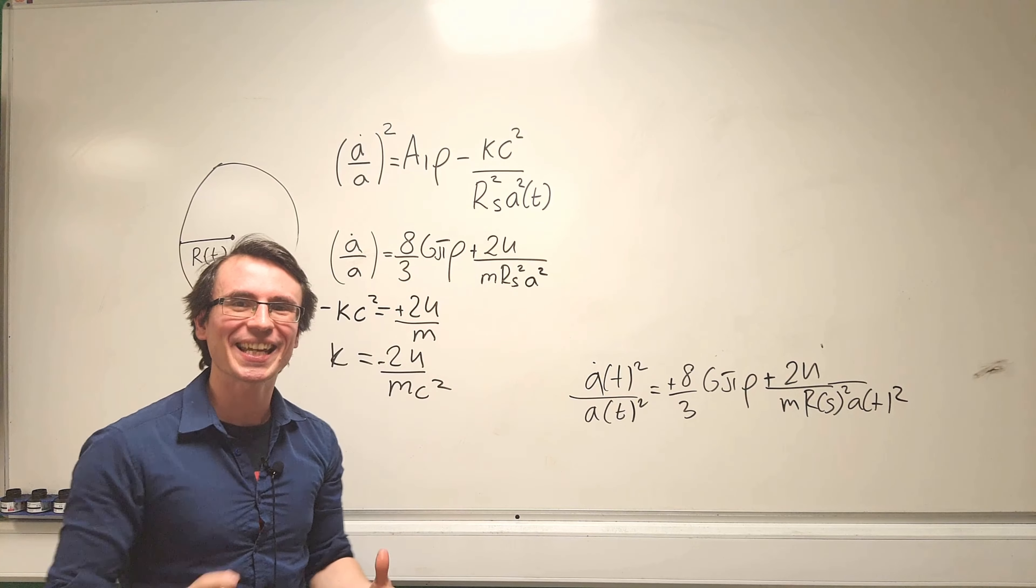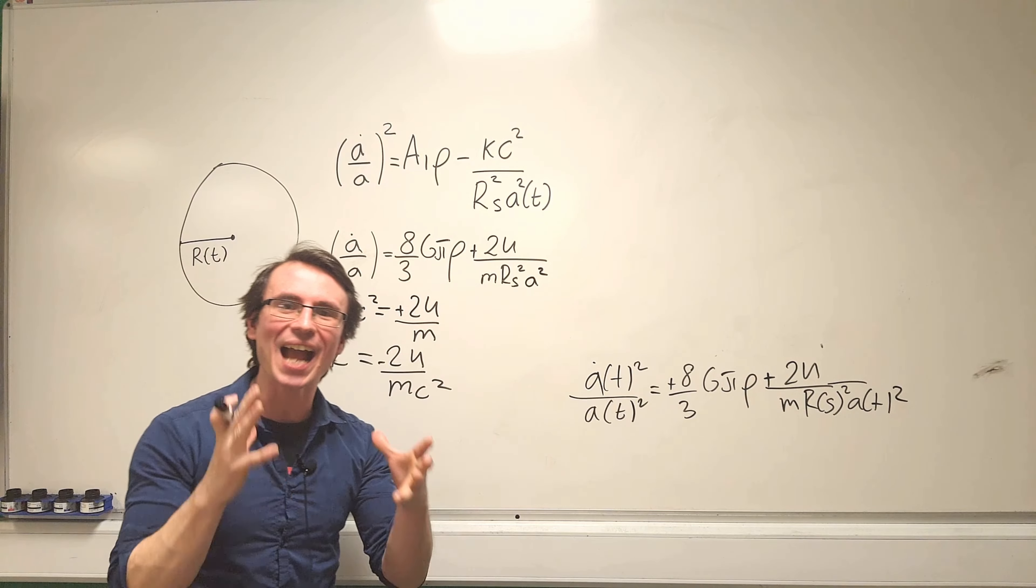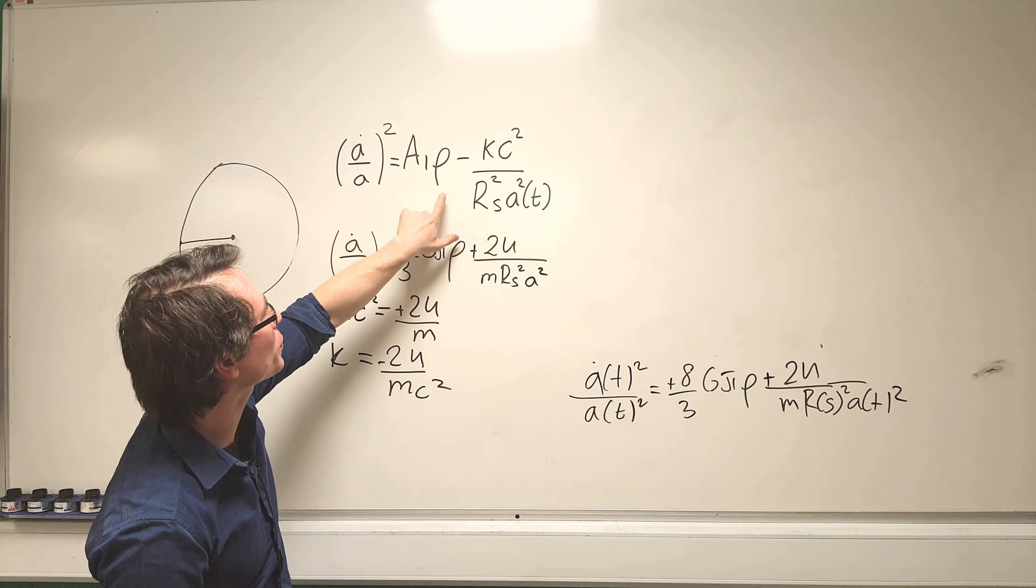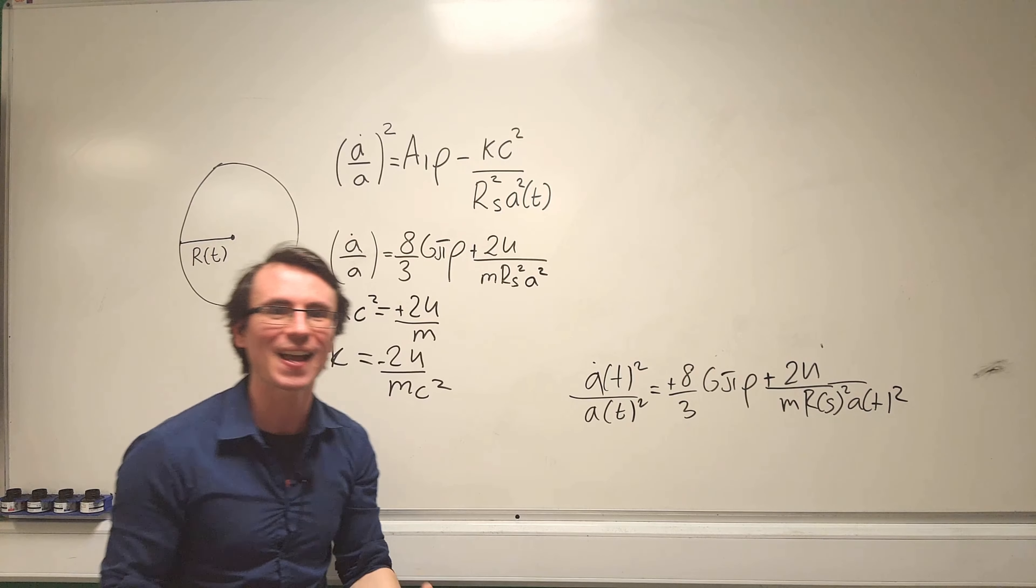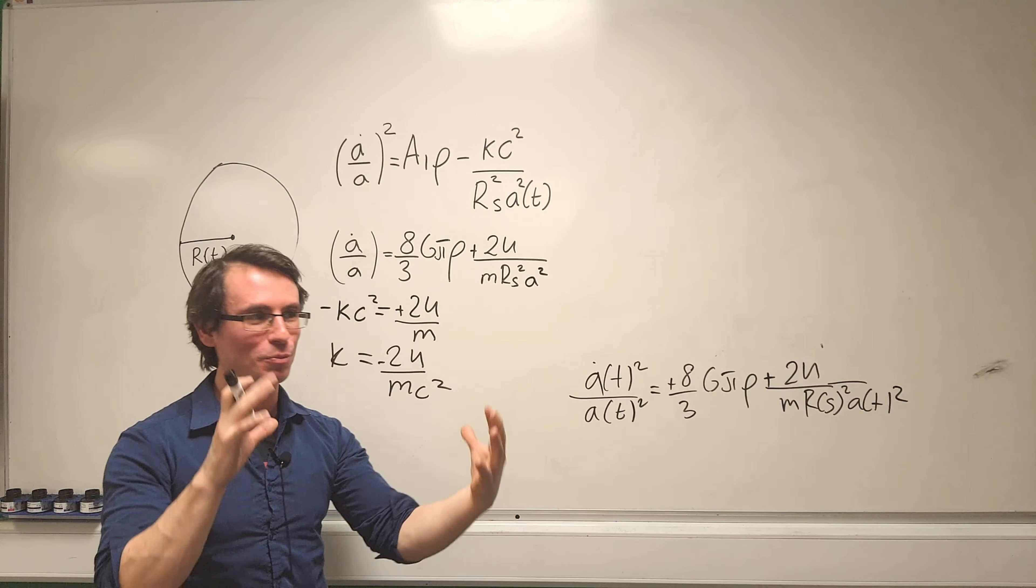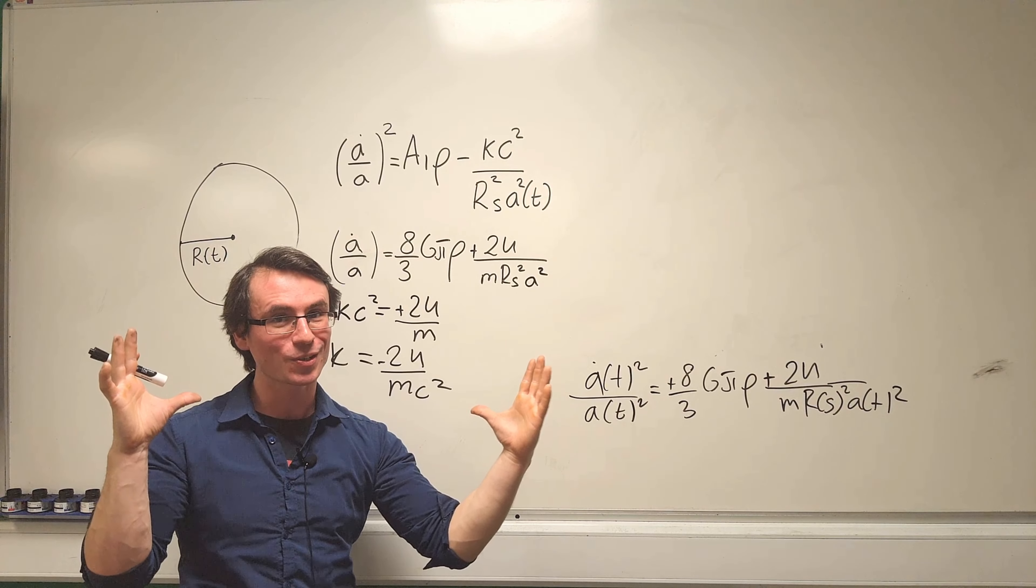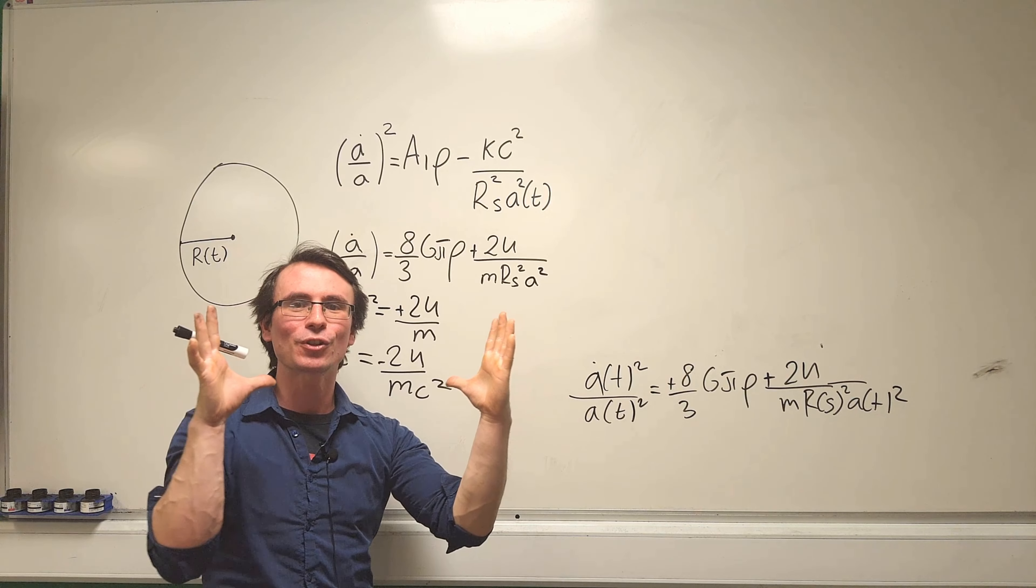This parameter k actually determines the ultimate fate of the universe. Think about this: if overall k is positive, those two terms are going to have opposite signs, meaning that the universe will eventually halt its expansion.